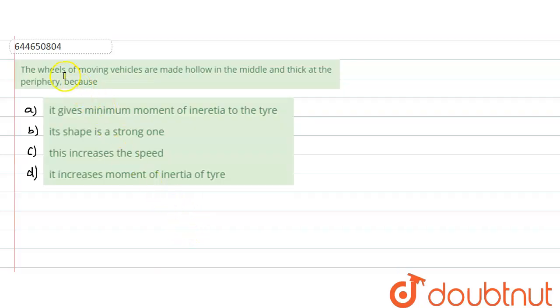In this question, what is given: the wheels of a moving vehicle are made hollow in the middle and thick at the periphery because: a) it gives minimum moment of inertia to the tire, b) its shape is a strong one, c) this increases the speed, or d) it increases moment of inertia of the wheel.